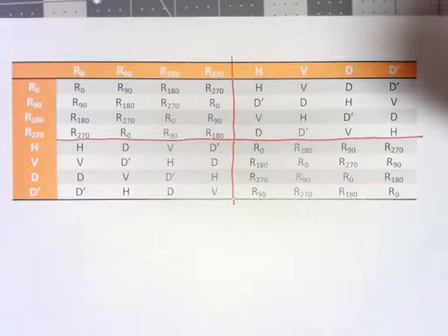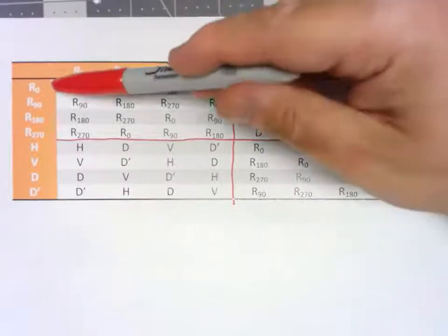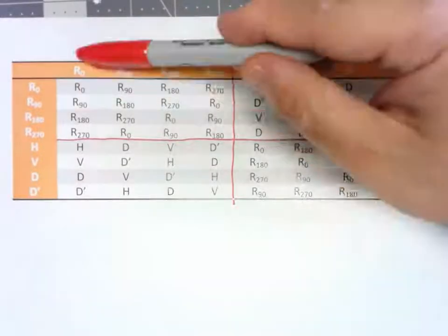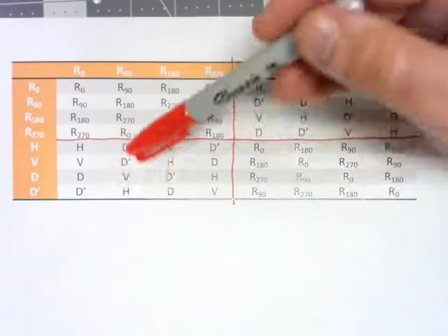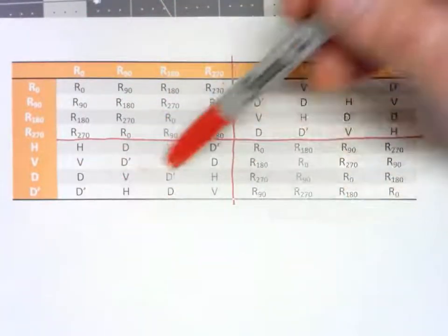Perhaps a little bit less obvious, but when you start looking at things, you notice that every single row and every single column has all eight of the elements, all eight of the symmetries, in some order.